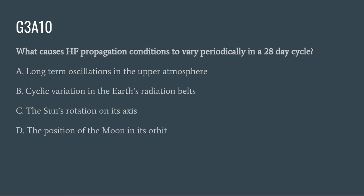G3A10: What causes HF propagation conditions to vary periodically in a 28-day cycle? A. Long term oscillations in the upper atmosphere. B. Cyclic variations in the Earth's radiation belts. C. The sun's rotation on its axis. Or D. The position of the moon in its orbit. The correct answer is C: the sun's rotation on its axis.